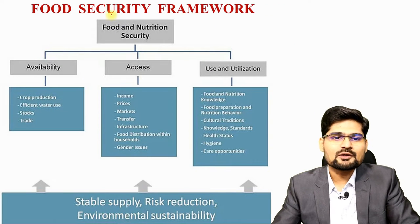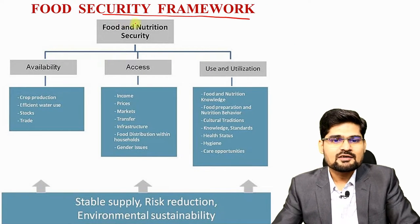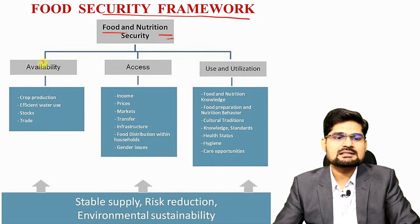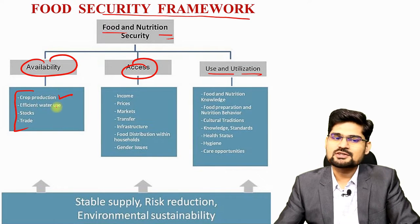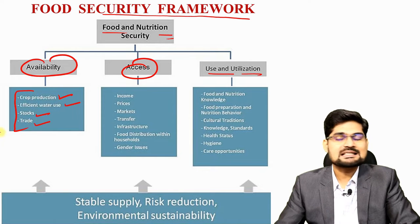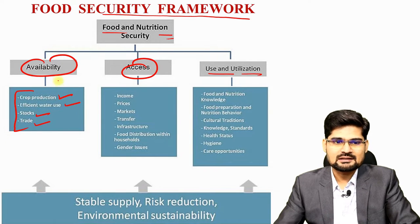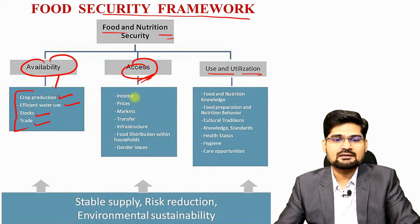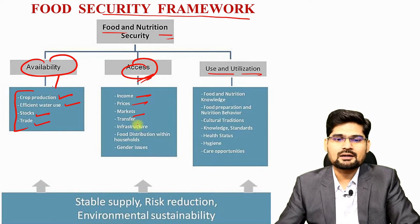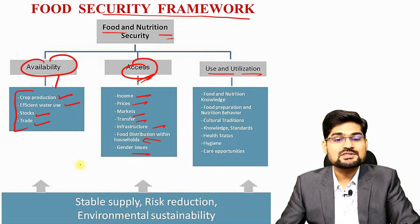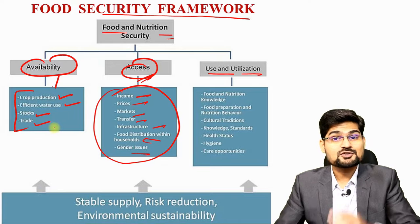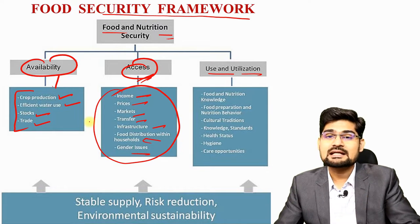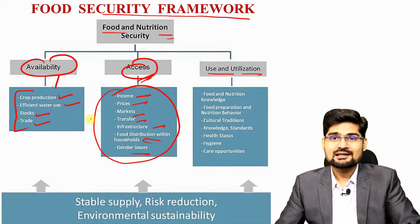When we look at the food security framework, the food and nutrition security framework has availability, accessibility, usage and utilization. Under availability, we have production, efficient water usage, stocks and trading. Under accessibility, we have income, prices, market, transfer, infrastructure, distribution system and gender issues. Food should be accessible across sections of society and across economies.